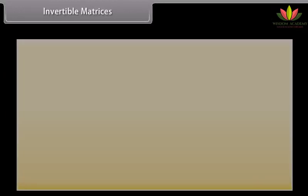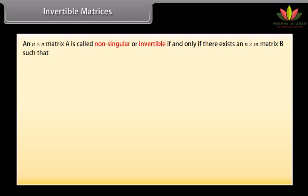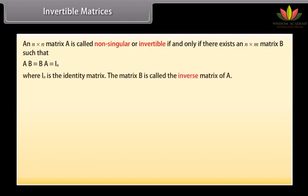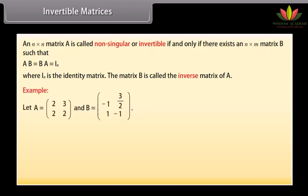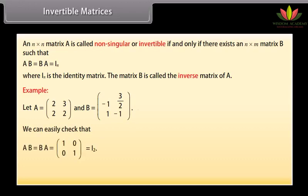Invertible matrices: An n×n matrix A is called non-singular or invertible if and only if there exists an n×n matrix B such that AB = BA = I_N, where I_N is the identity matrix. The matrix B is called the inverse matrix of A. Here A and B are given; we can check that AB = BA = identity matrix. Hence A is invertible and B is its inverse.